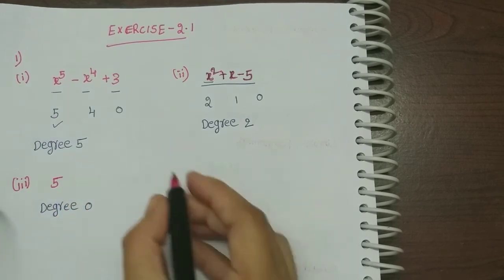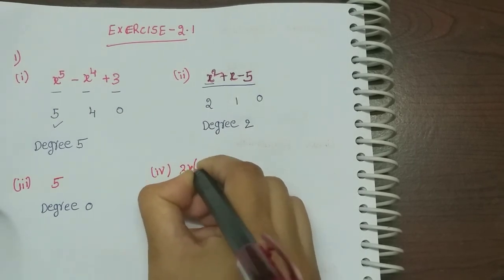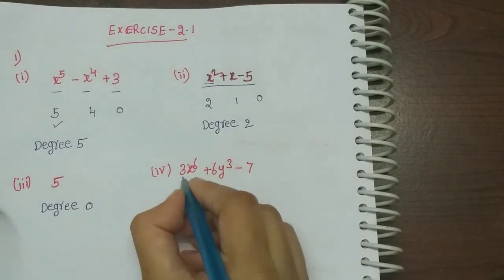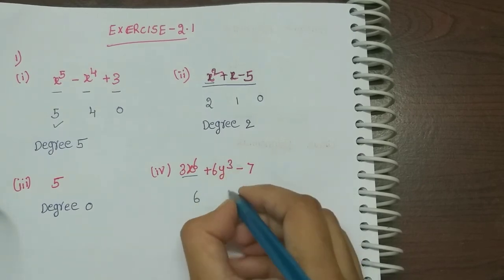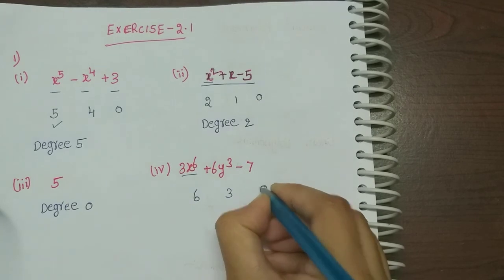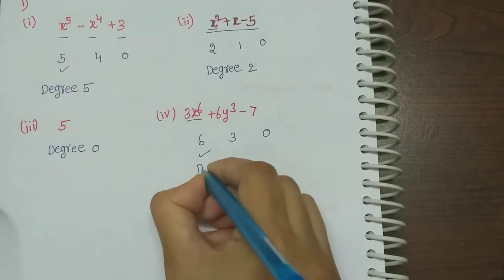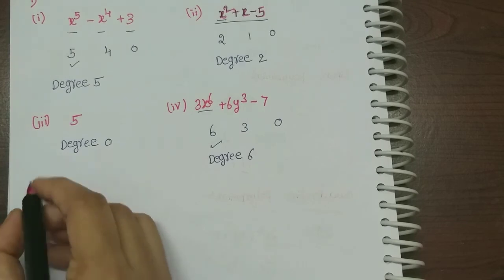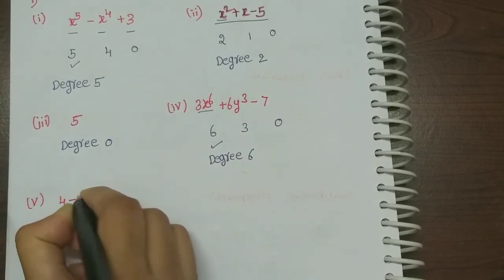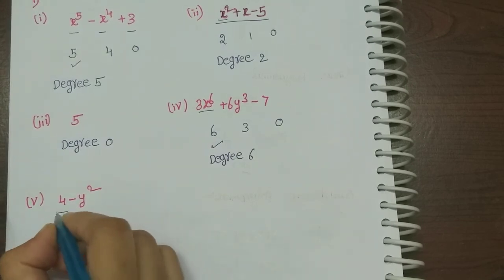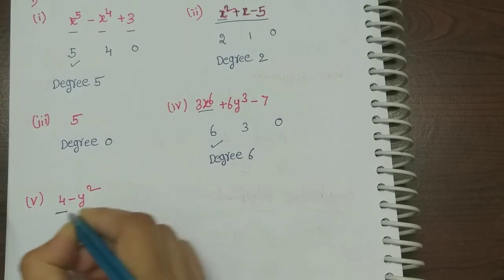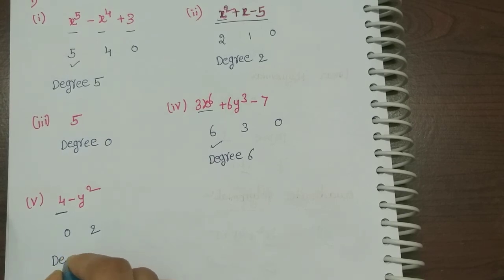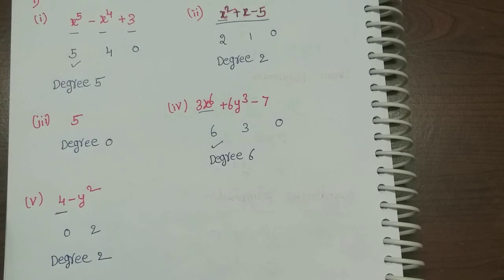Fourth polynomial: 3x to the power 6 plus 6y cubed minus 7. First term has exponent 6, second term y has exponent 3, constant term has degree 0. The highest is 6, so degree is 6. Fifth polynomial: 4 minus y squared. The first term is constant, degree 0. The second term y has exponent 2. The highest is 2, so the degree is 2.